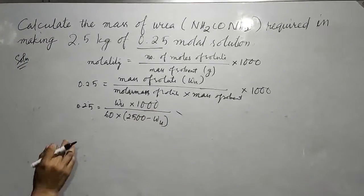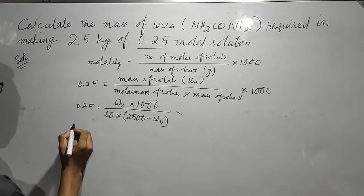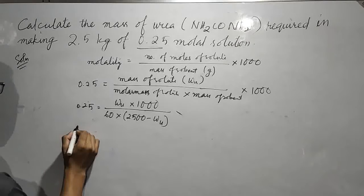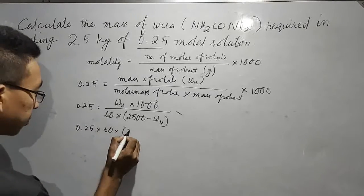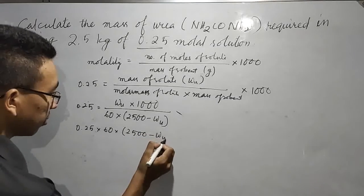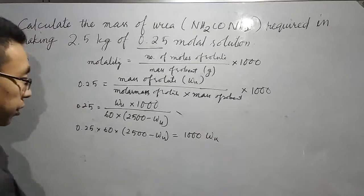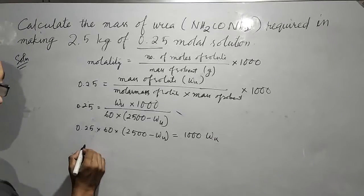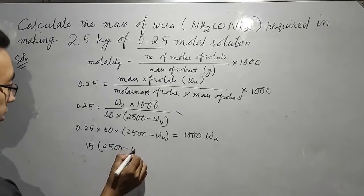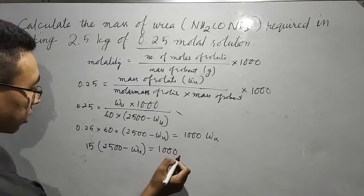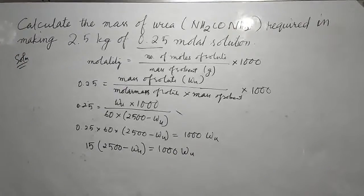We shall cross multiply. 0.25 into 60 into (2500 minus W_u) equals 1,000 W_u. If you multiply, this becomes 15, then (2,500 minus W_u) equals 1,000 W_u.